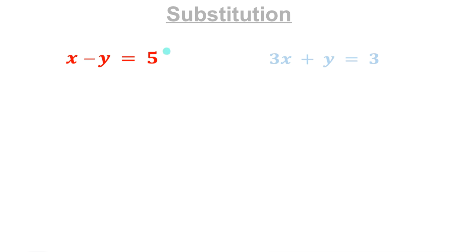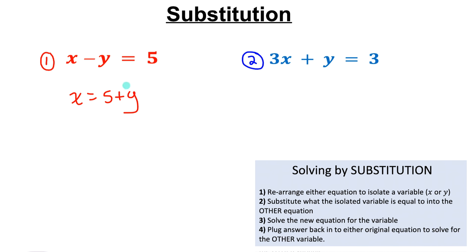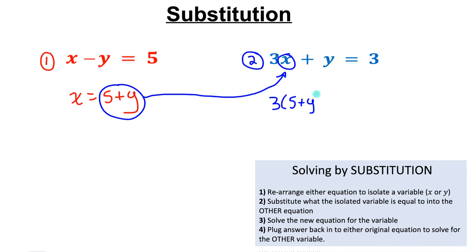For substitution, line both equations up side by side and number them. Isolate one variable in either equation. In equation 1, x has a coefficient of 1, so it's easy to isolate. Move −y to the right: x = 5 + y. Now take what x equals and substitute it into the other equation, replacing x with (5 + y), giving 3(5 + y) + y = 3. Now we have an equation with only the variable y.